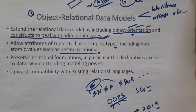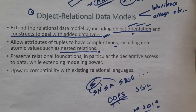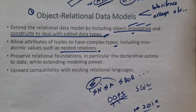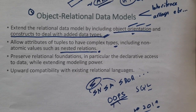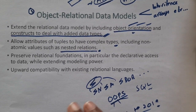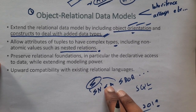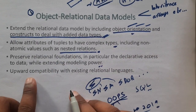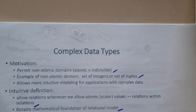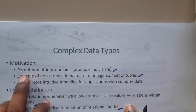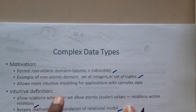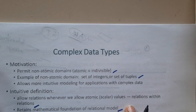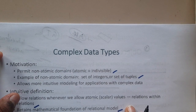Nested relations help you understand and extract data in a preferred way, instead of using joins. The model also preserves relational fundamentals, particularly declarative querying. Now you might ask: what are these complex data types? Complex data types are non-atomic — in simple words, an array is a complex data type.